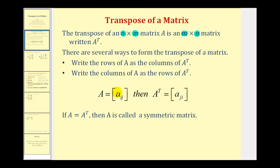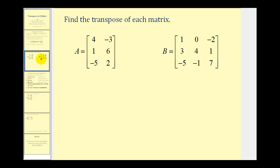We can also express this using subscript notation. Notice how these elements have row i, column j, and the transpose matrix has row j, column i — we are interchanging the rows and columns. If matrix A is equal to the transpose of matrix A, then A is called a symmetric matrix.